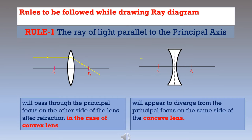Now the same Rule 1 for a concave lens: the ray of light parallel to the principal axis will appear to diverge from the principal focus on the same side of the concave lens. We call the convex lens the converging lens and the concave lens the diverging lens.